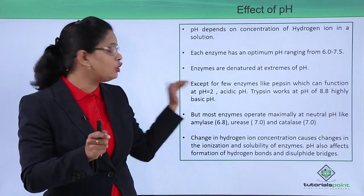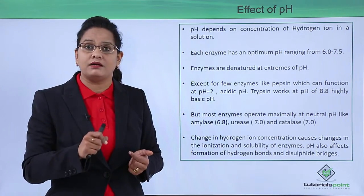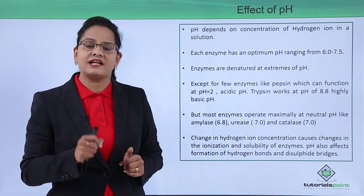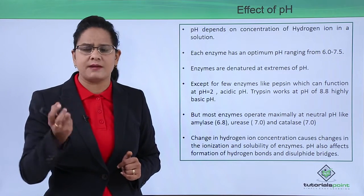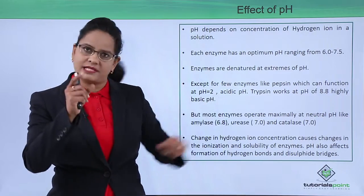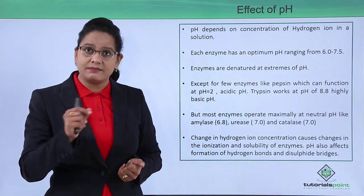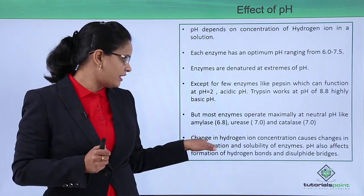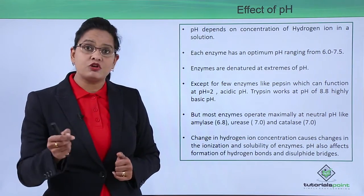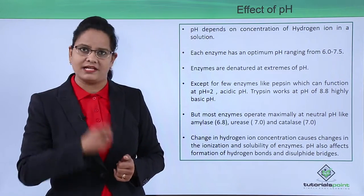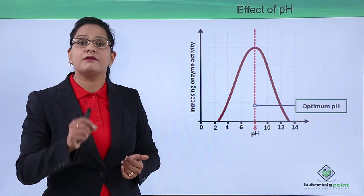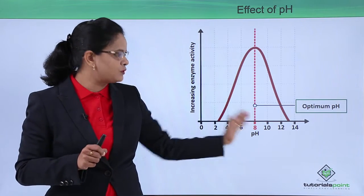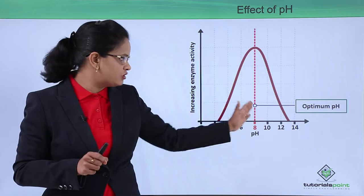There are some enzymes which act at lower acidic pH — for example, pepsin acts in the stomach where the pH is acidic. In the intestine, trypsin acts at a pH of 8.8, which is highly basic. So there are exceptions, but the general range is 6 to 7.5. Most enzymes maximally operate at neutral pH. The effect occurs by affecting ionization and solubility of the enzyme, as well as formation of hydrogen bonds and disulfide bonds.